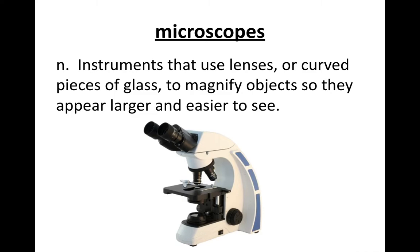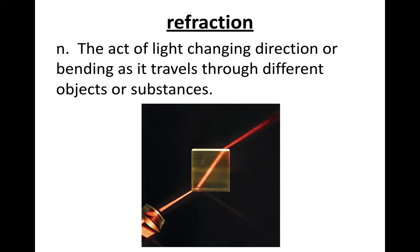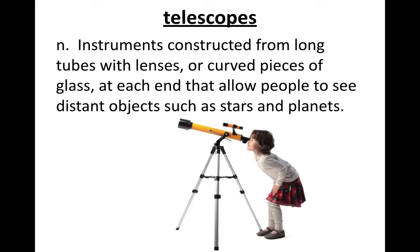Microscopes: instruments that use lenses or curved pieces of glass to magnify objects so they appear larger and easier to see. Opaque: describes a material that absorbs light and prevents it from shining through — not transparent. Refraction: the act of light changing direction or bending as it travels through different objects or substances.